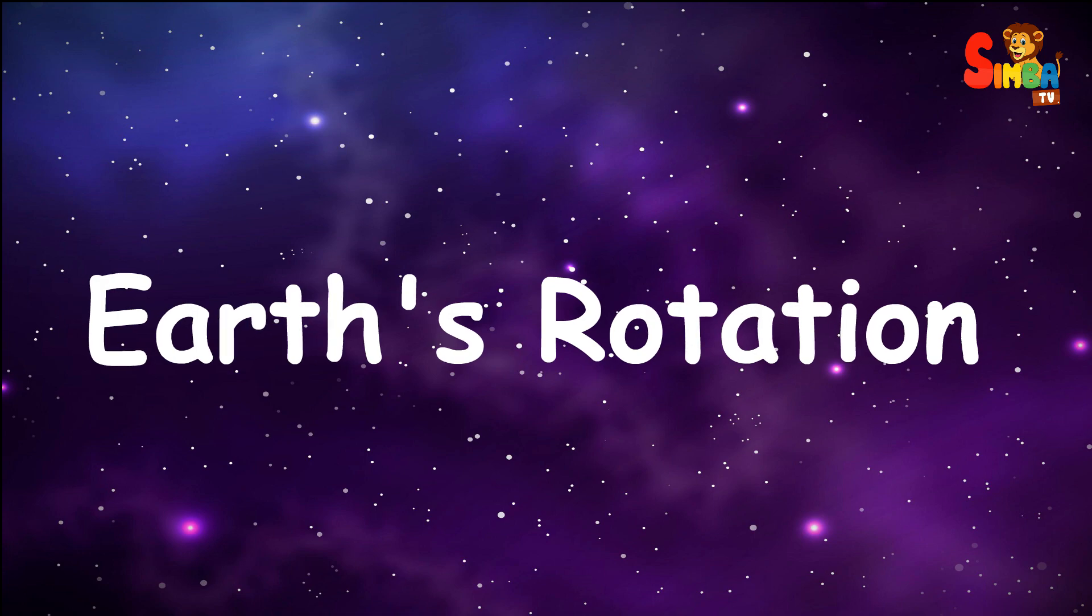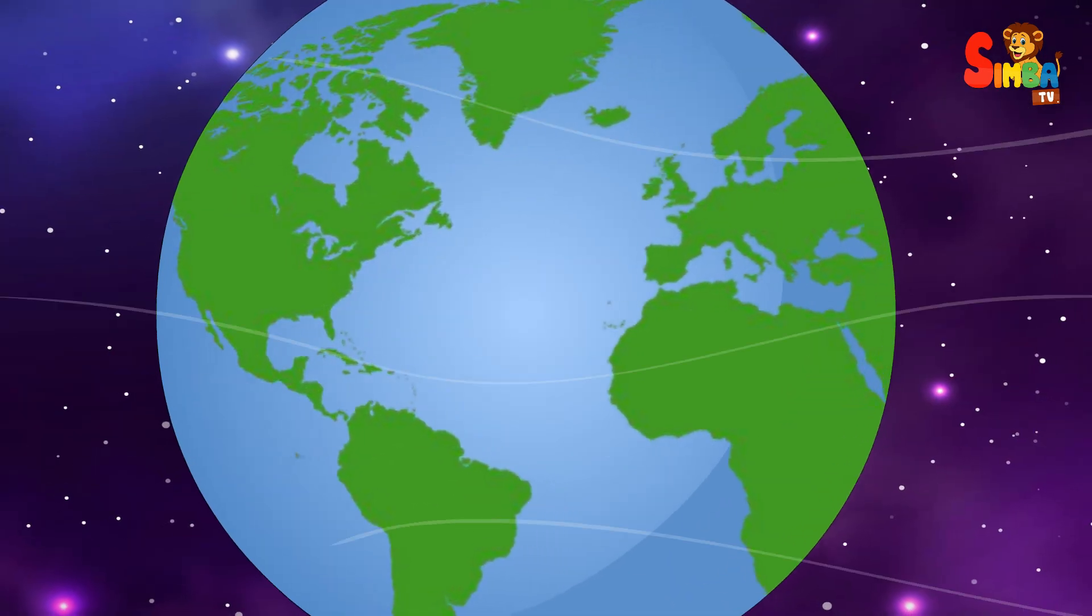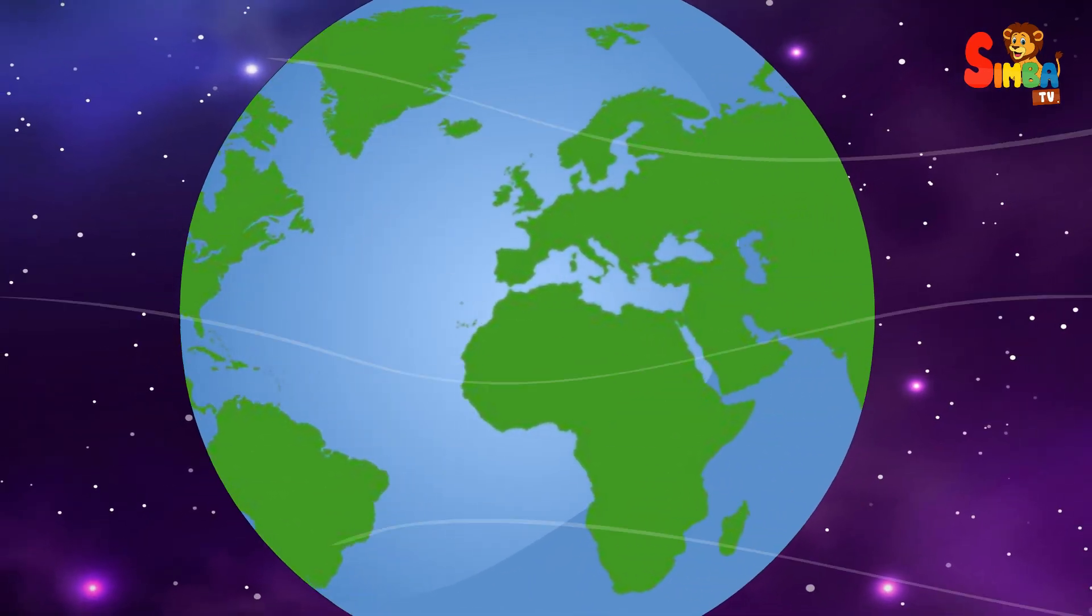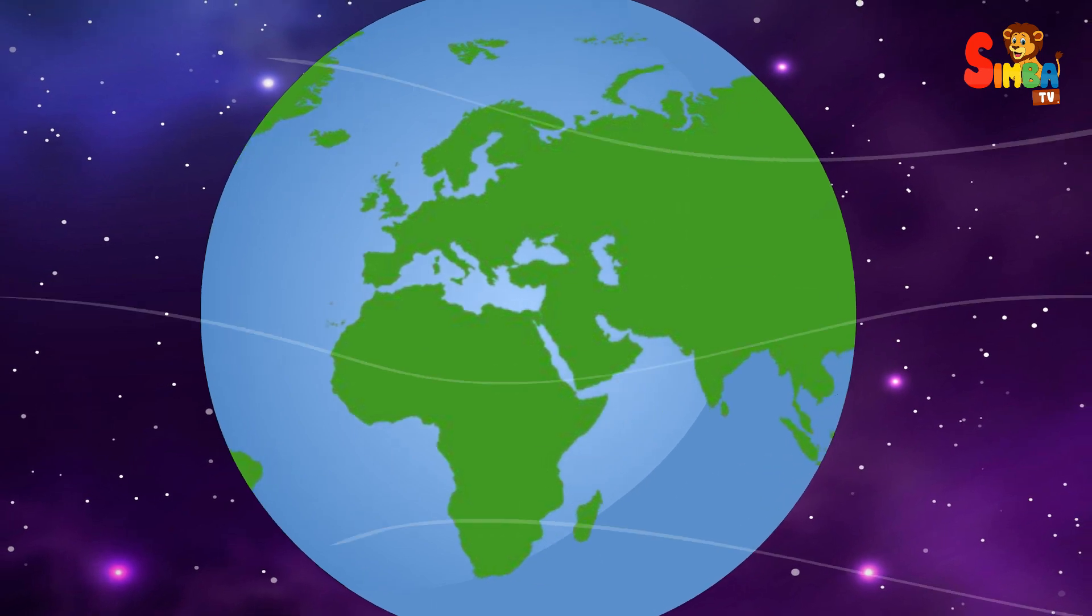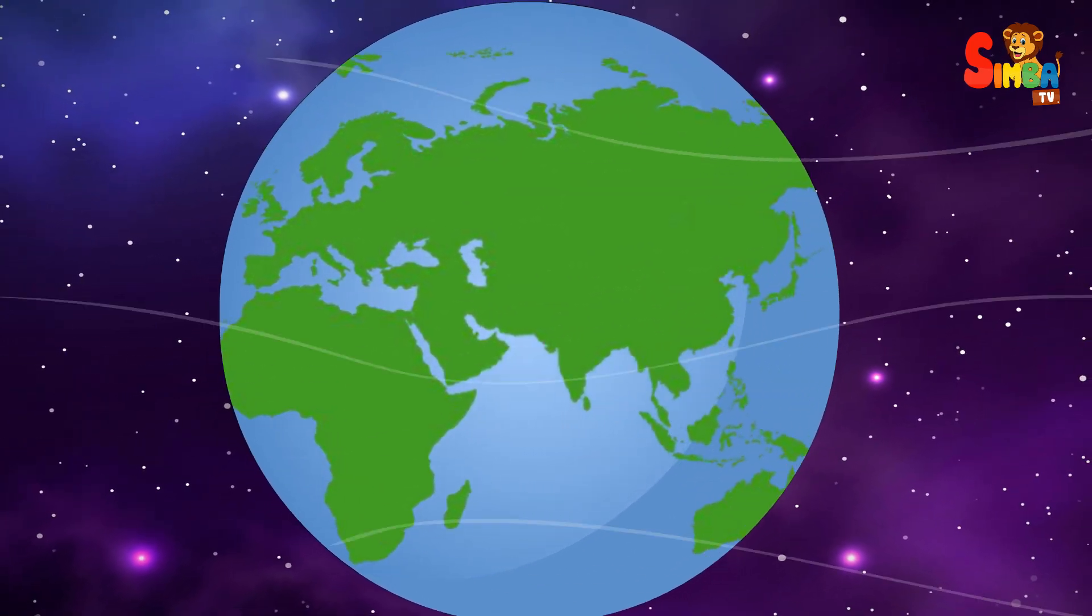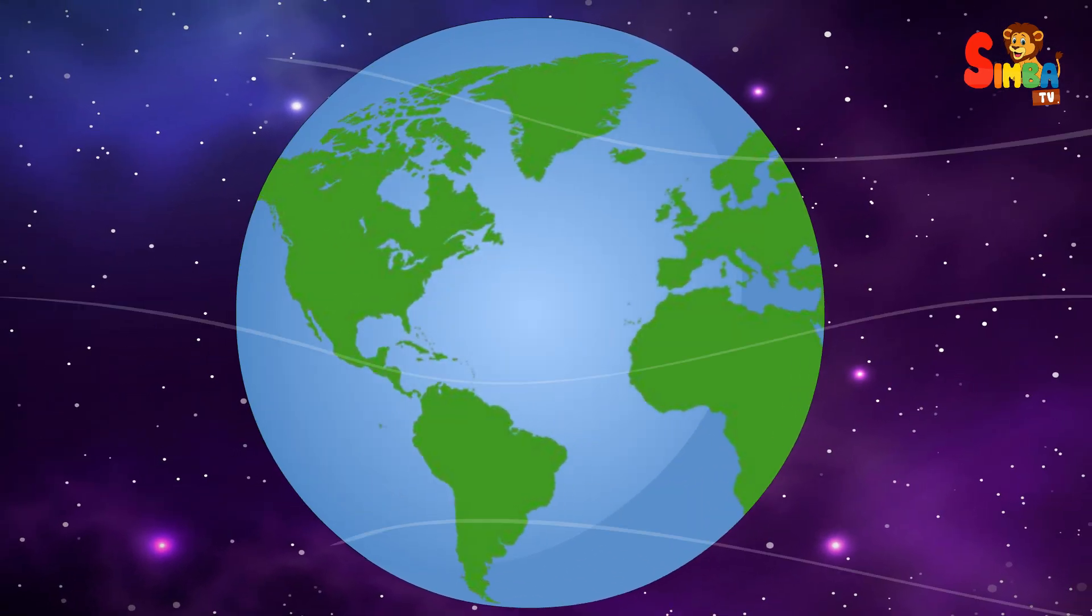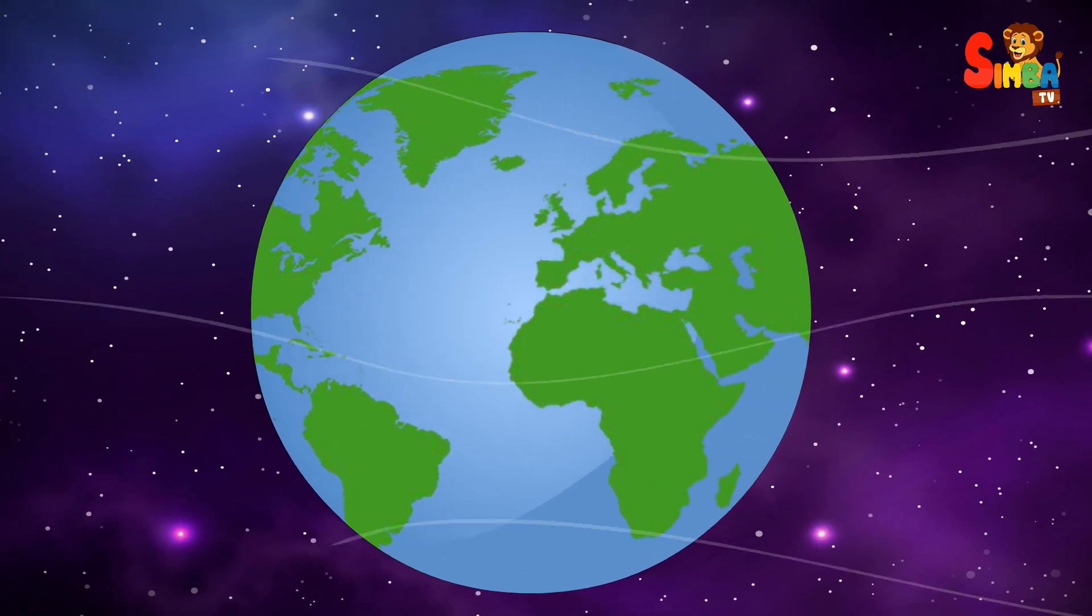Earth's rotation affects the direction of the winds. The combination of the Coriolis effect and pressure differences results in the formation of wind patterns around the globe.